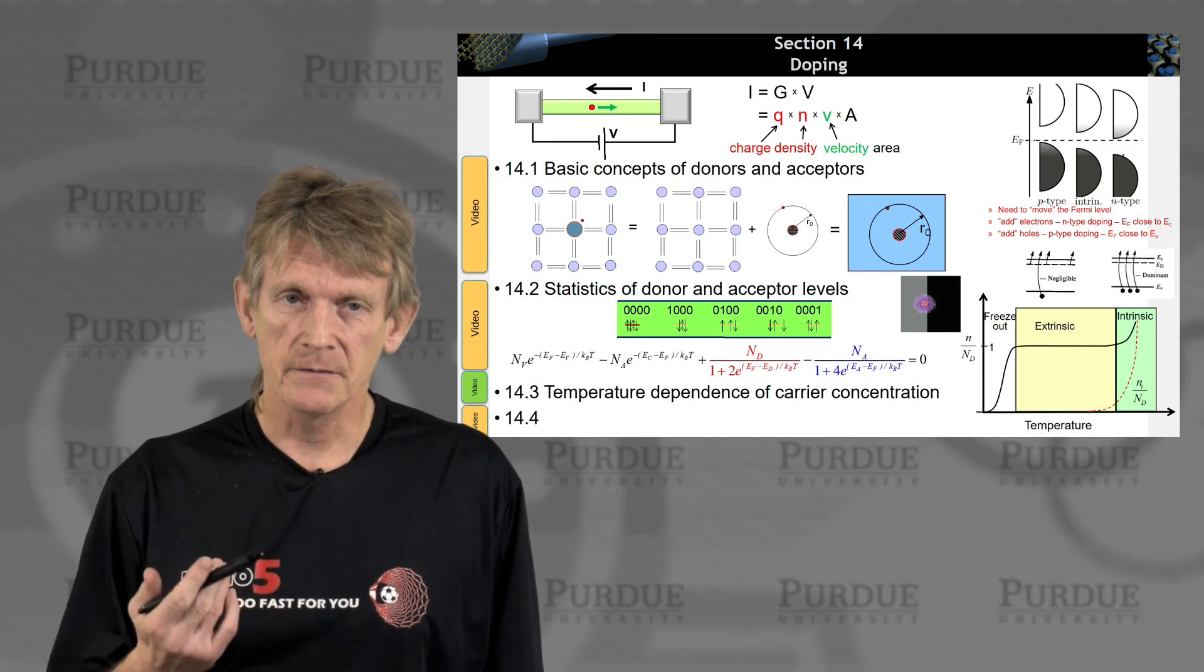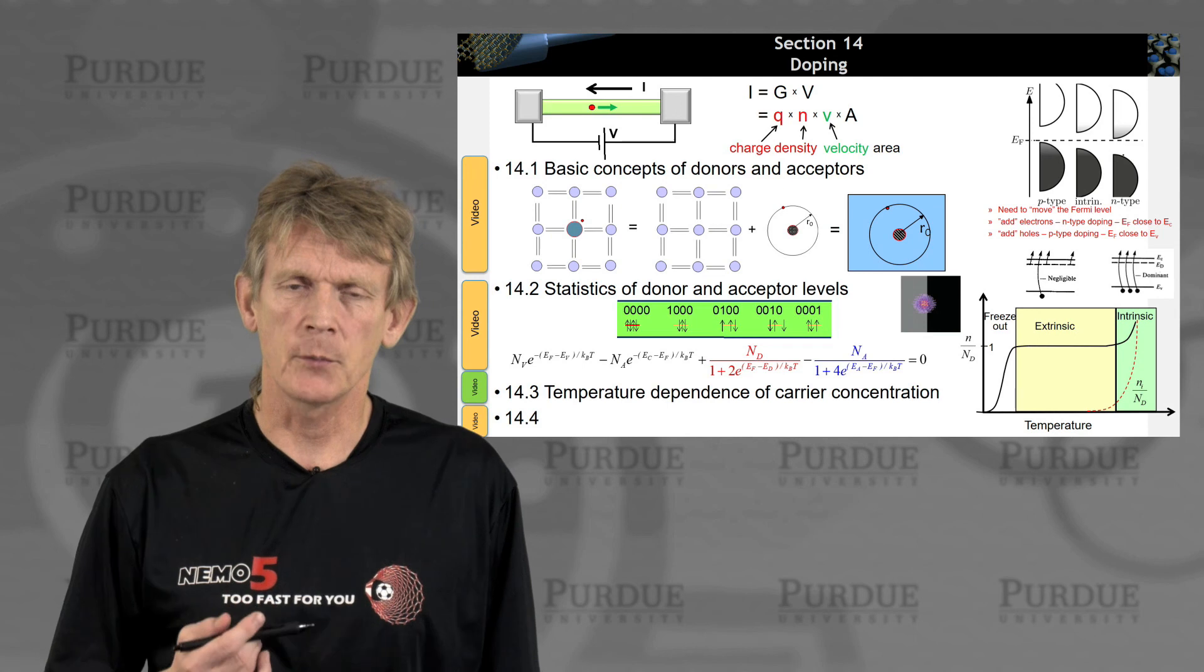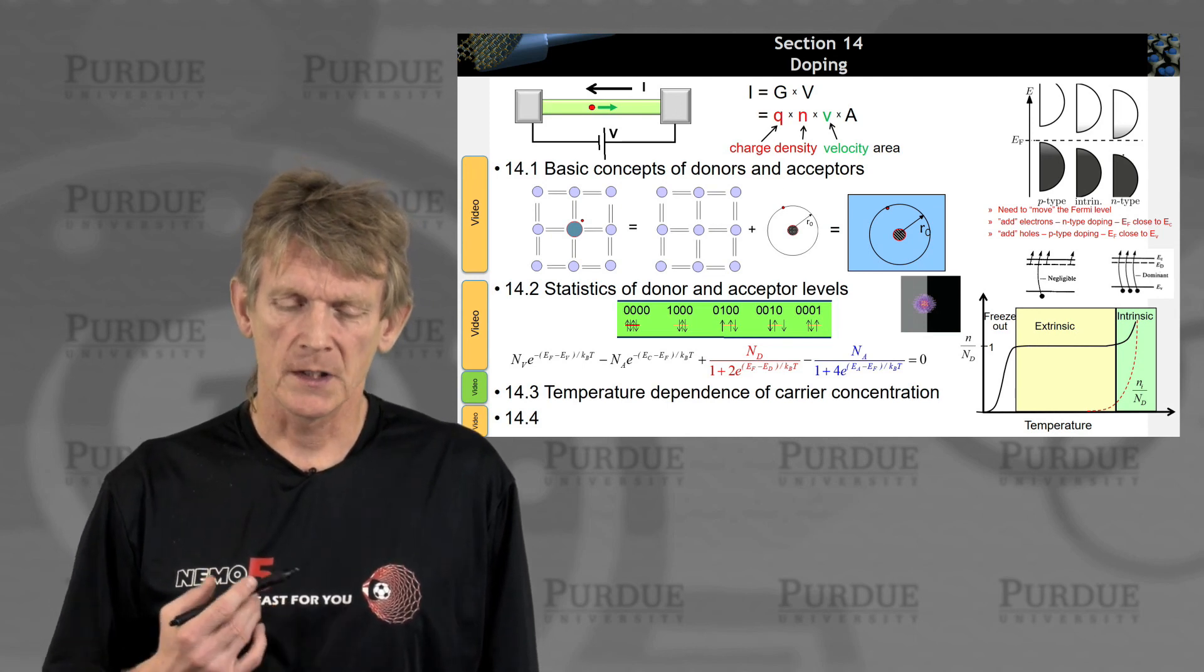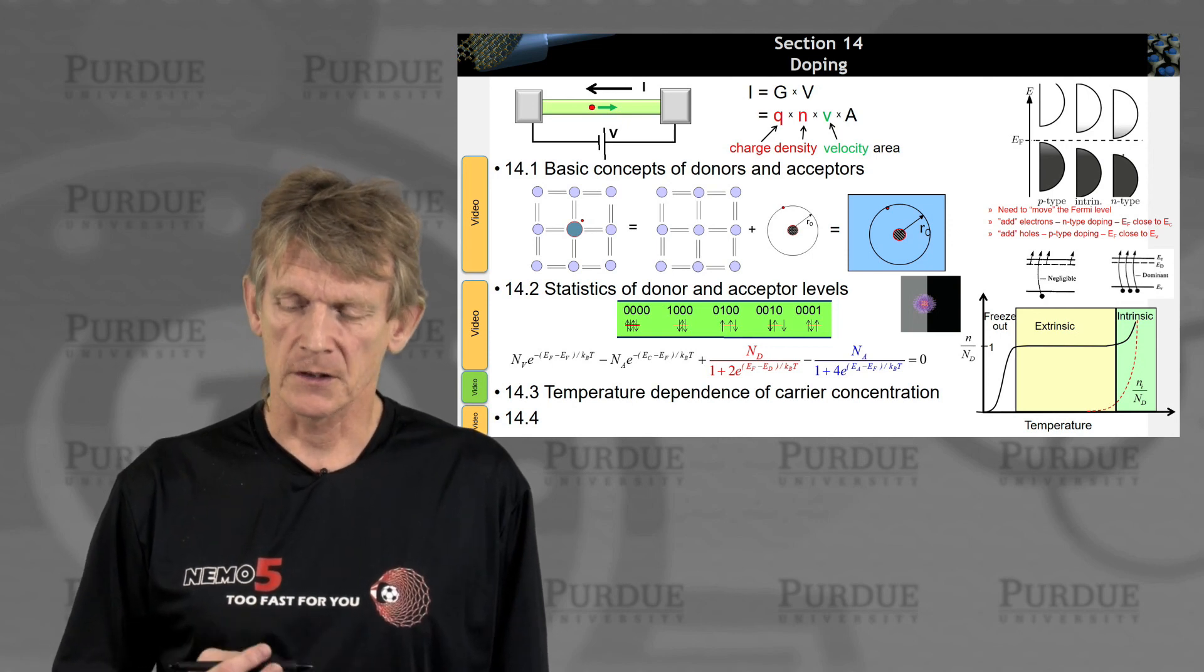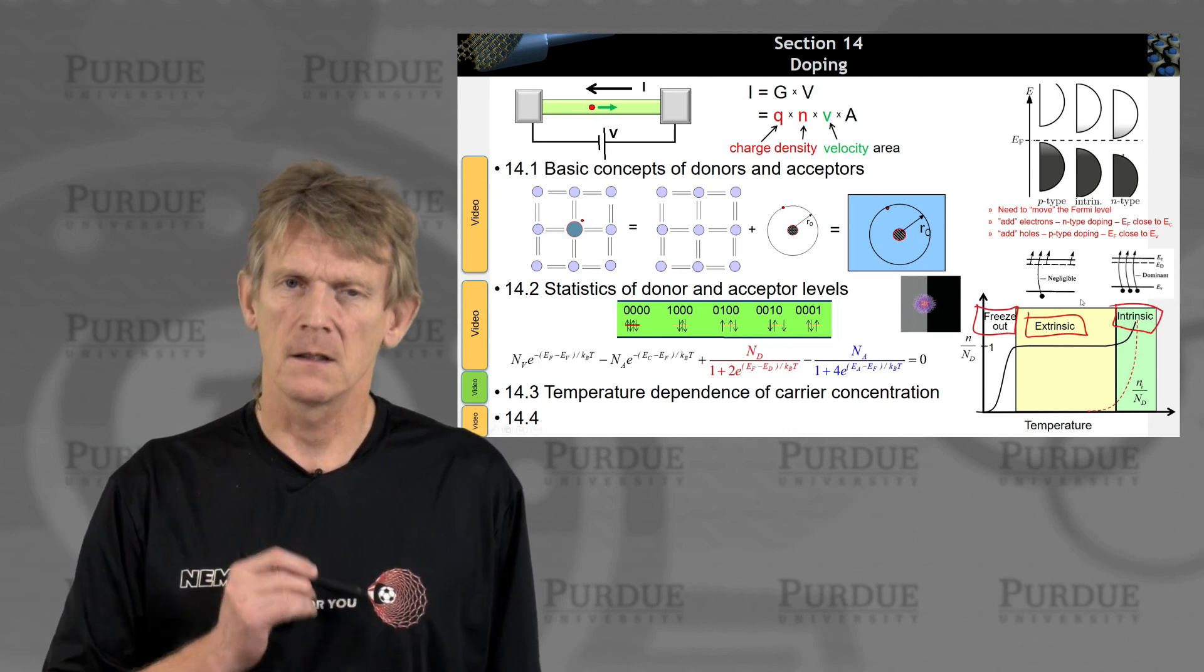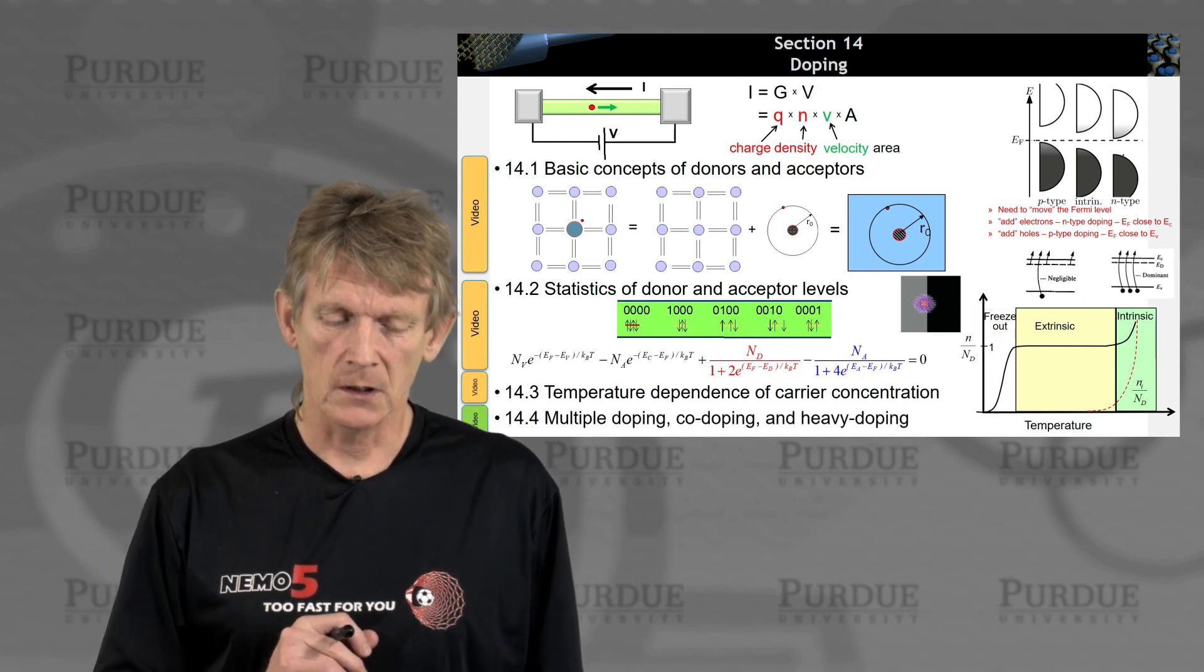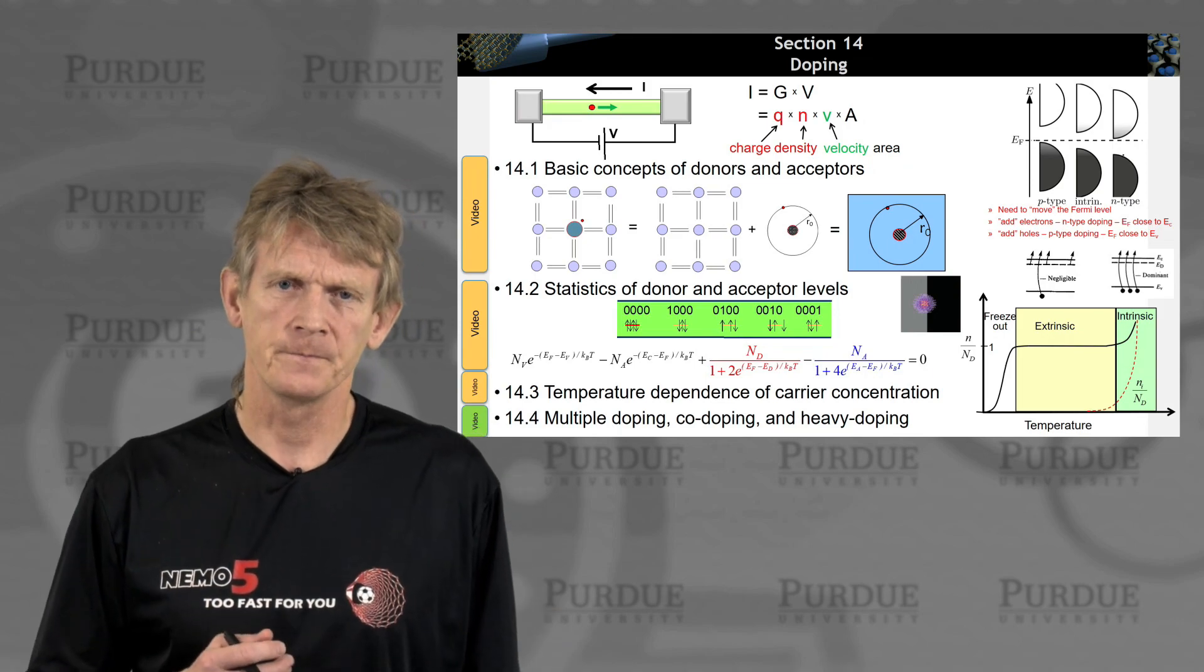All right. So, given that you have a donor density and a temperature, you know the donor levels, and you can assume, say, you have no acceptors, you can calculate a Fermi function. And we have defined these three regions here, freeze-out, extrinsic, and intrinsic. All right? So now, in the next section, we're going to look at effects of multiple doping, cold doping, and heavy doping.